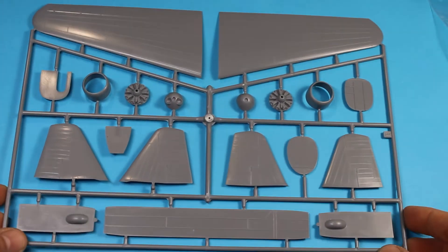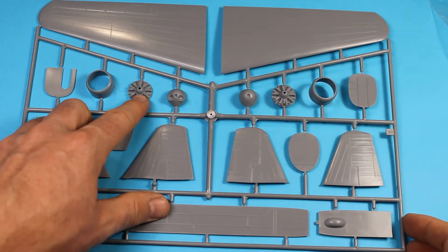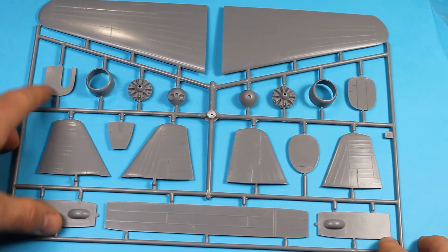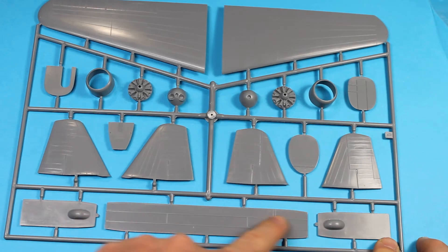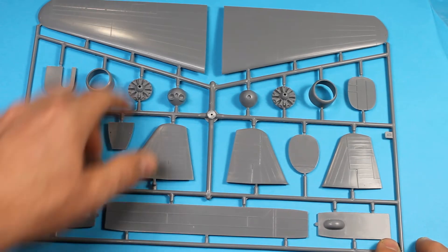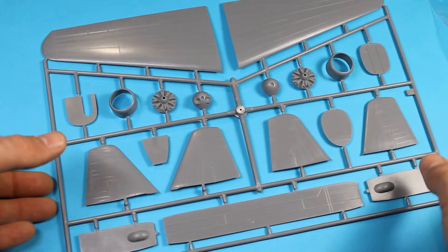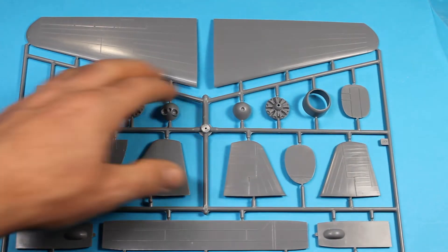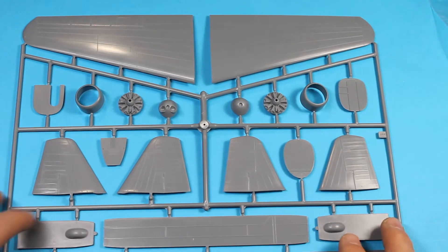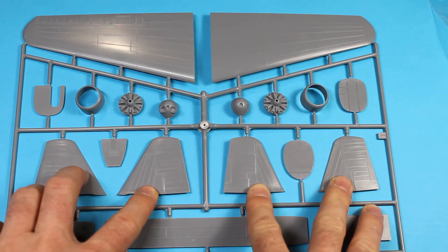Then the next sprue covers the two engines, and they're just fronts here that go into the cowlings. A few small parts for the interior. This is the inside walkway there for the interior as well. And we get the upper halves, oh no, the lower halves of the wings there, I believe. No, I think they are the upper halves of the wing. And the two different tail fins there.